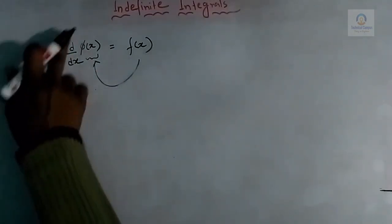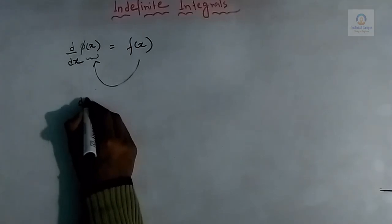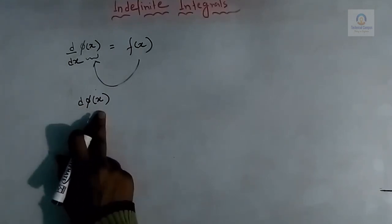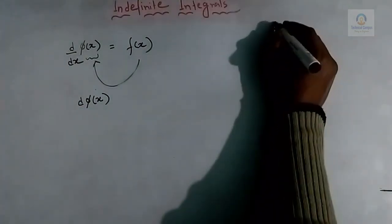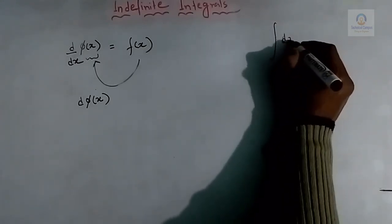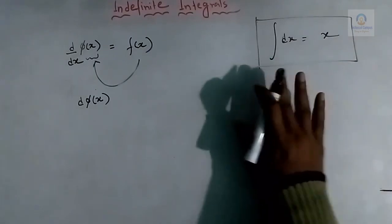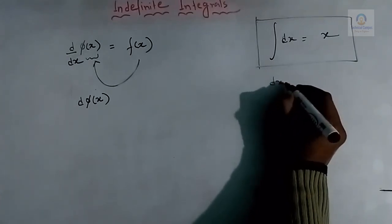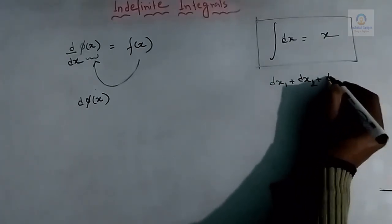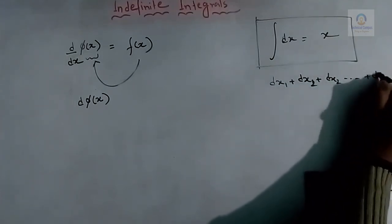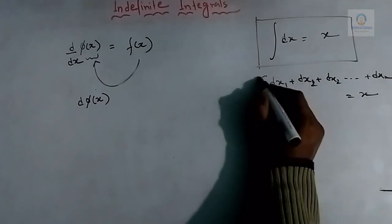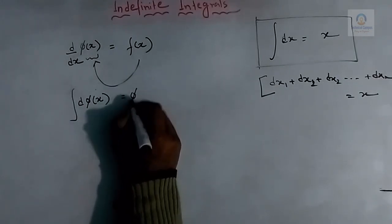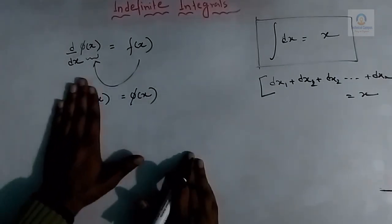If we write d(phi of x), this means a small component of the function phi of x. Integration basically means adding or summing. Just as integrating dx gives x, if we keep on adding all the small components of a function, we get that function back. So if we integrate d(phi of x), we will get the function phi of x.